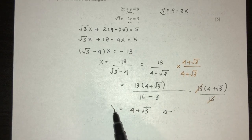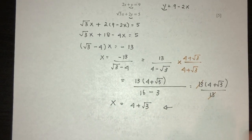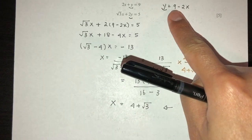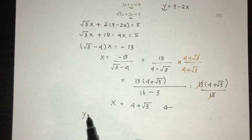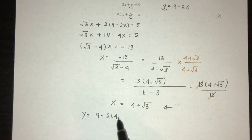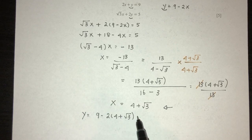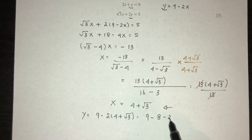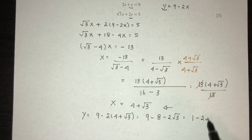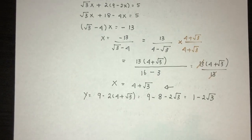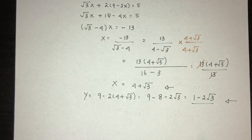Now find y using y = 9 − 2x: y = 9 − 2(4 + √3) = 9 − 8 − 2√3 = 1 − 2√3. That is your value for y. That is question number four.